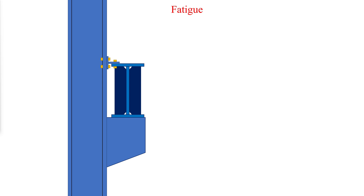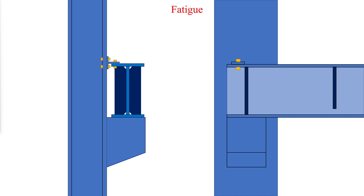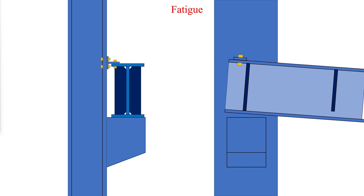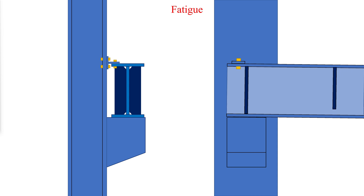Tiebacks are provided at the end of the crane runway girders to transfer lateral forces from the girder top flange into the crane column and to laterally restrain the top flange of the crane girder against buckling. The tiebacks must have adequate strength to transfer lateral crane loads; however, they must also be flexible enough to allow for longitudinal movement of the top of the girder caused by girder end rotations. The tieback must also allow for vertical movement due to axial shortening of the crane column.